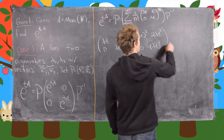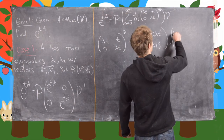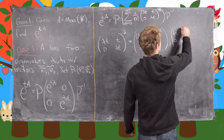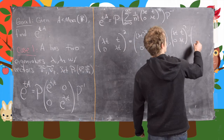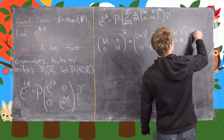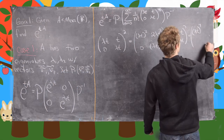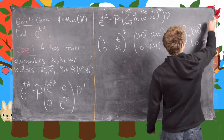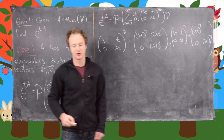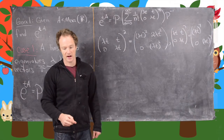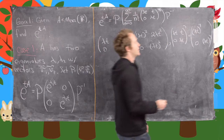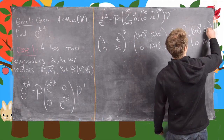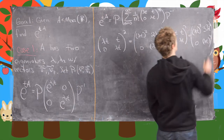Now let's see what happens when we cube it. The matrix (lambda T, T, 0, lambda T) cubed gives us (lambda T) cubed on the diagonal, 0 in the lower left, and — I'll let you multiply it out — you get 3 lambda squared T cubed in the upper right.